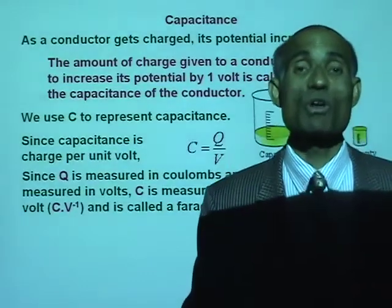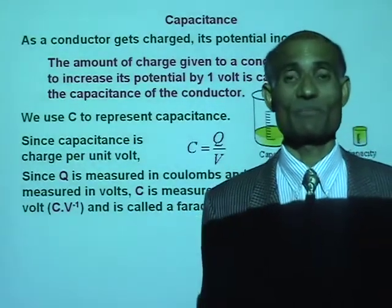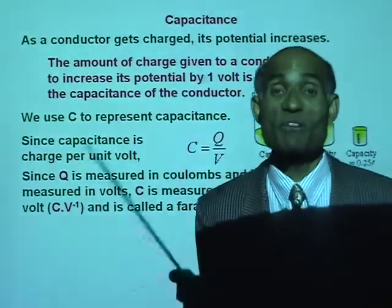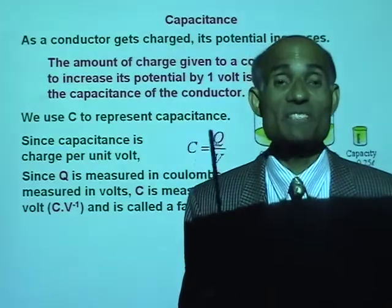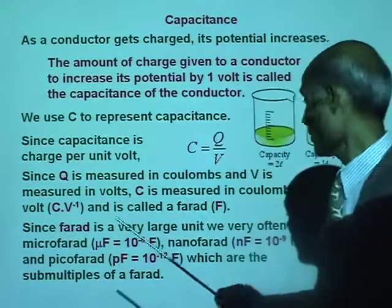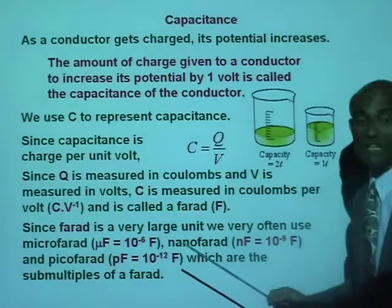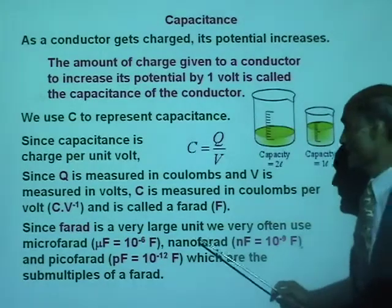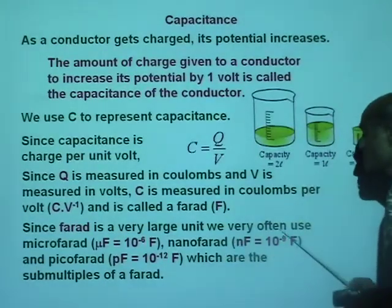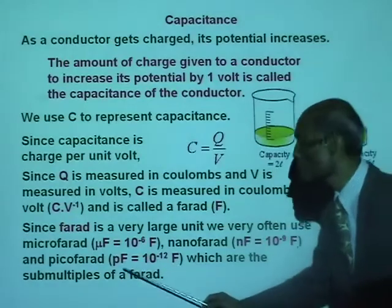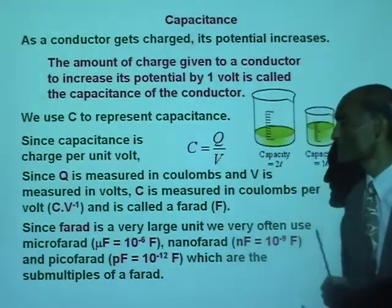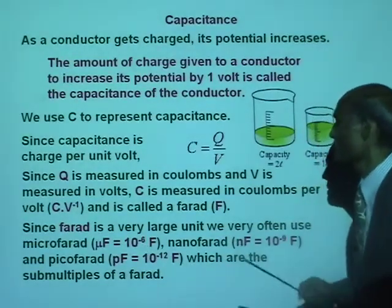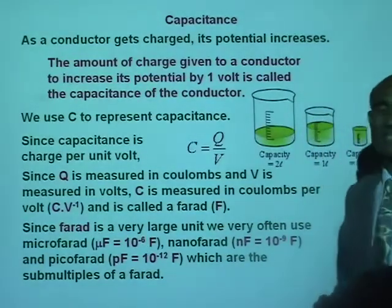Farad is a very big unit; it is very difficult to obtain a capacitance of 1 farad. Therefore we divide that into smaller units: microfarad (10⁻⁶ F), nanofarad (10⁻⁹ F), and picofarad (10⁻¹² F). Most often we will be using microfarad and nanofarad.